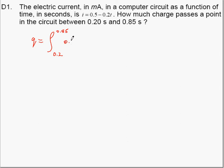So 0.5 minus 0.2t, and we know that because Q equals the integral of i dt.